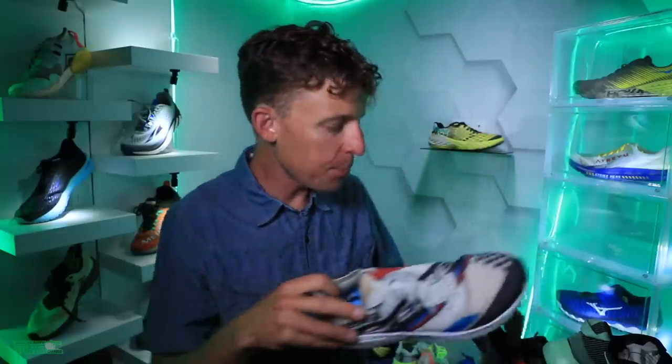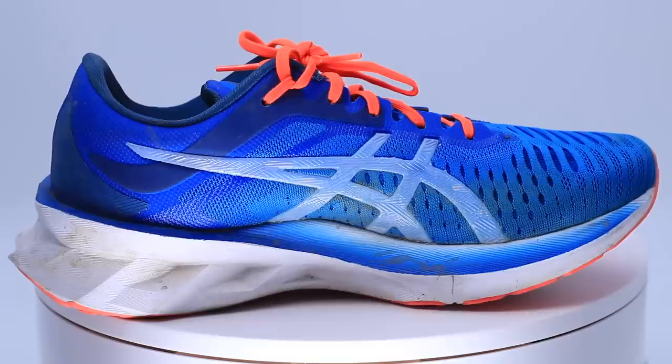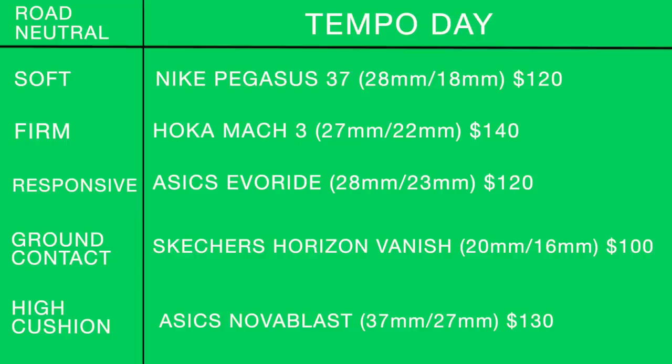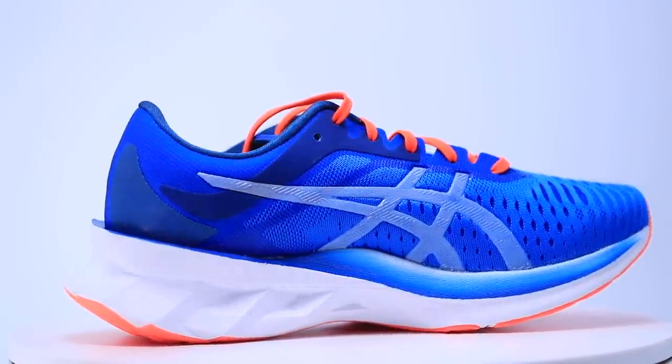For high cushion tempo day shoe: the Asics Novablast — 37mm in the heel, 27mm in the forefoot, $130. As far as stability through your foot strike, some people do feel a little unstable in this shoe. But this is one of my favorite shoes in 2020 so far.